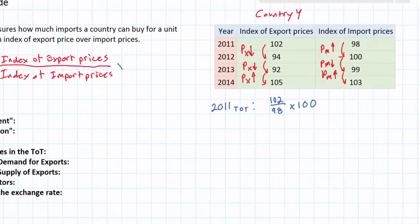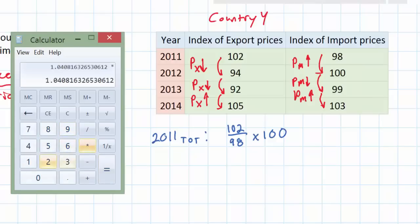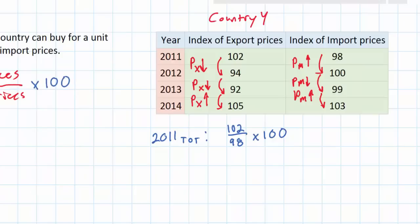The terms of trade is expressed as an index itself, so we multiply whatever value we get when dividing the two index prices by 100. Doing that calculation: 102 divided by 98 gives us 1.04, multiply this by 100, and we get a terms of trade of 104 for 2011.